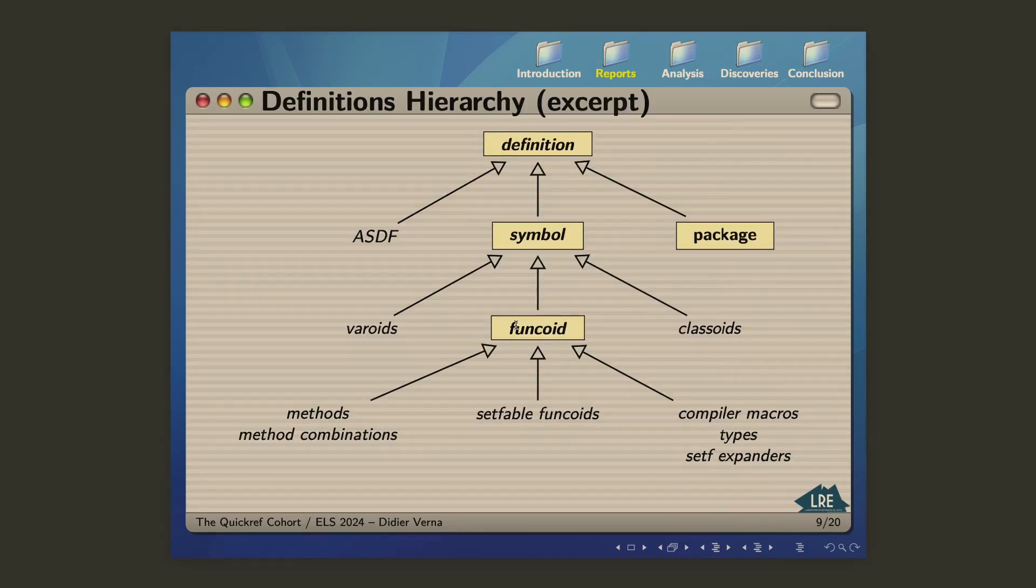The definitions in question, and this is fully documented in the manual, the definitions are designed in an object-oriented fashion. So you have an abstract class which represents all the definitions there is in DECLET. You have a sub-hierarchy for ASDF definitions, systems, modules, files, all that stuff. You have, obviously, a class for package definition, and then there is everything that is named by a symbol. So varoids, classoids, which means structures, conditions, and classes, funkoids, set-effable funkoids, method combination, the whole bunch of stuff.